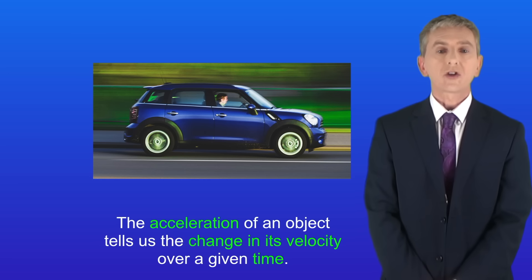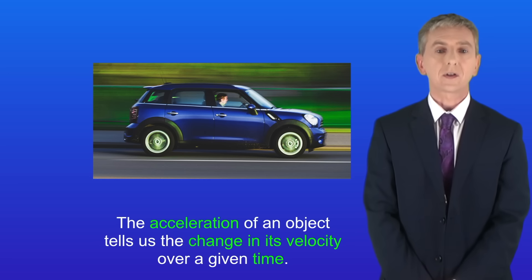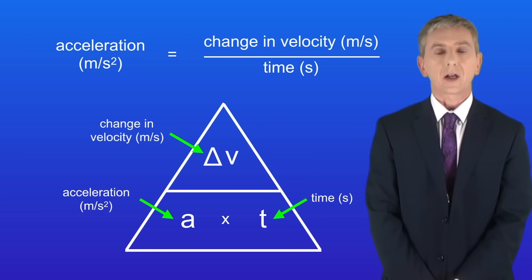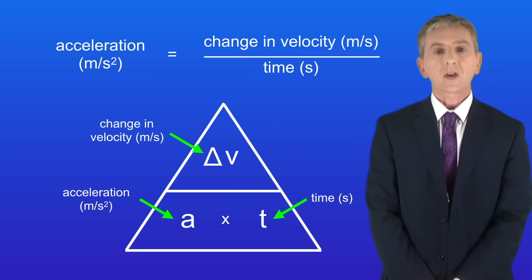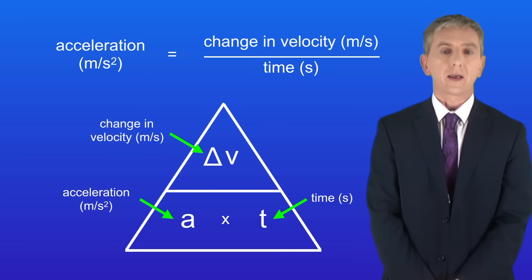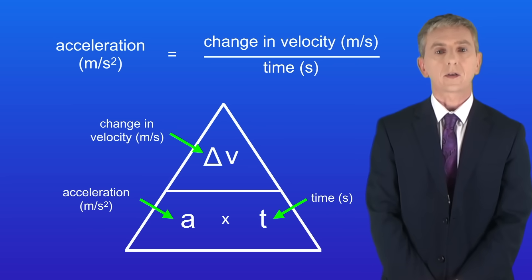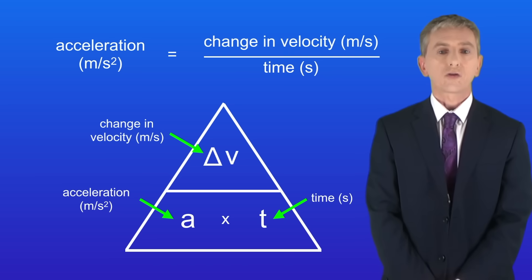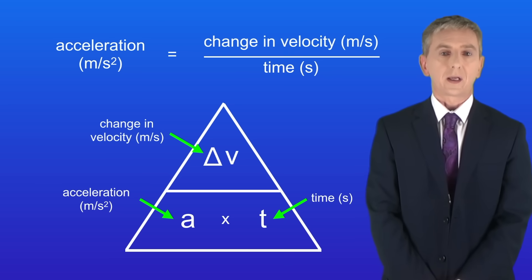The acceleration of an object tells us the change in its velocity over a given time, and we calculate acceleration using this equation: acceleration in meters per second squared equals the change in velocity in meters per second divided by the time in seconds. I've also given you the triangle for this equation. You're not given this equation in the exam so you need to learn it.